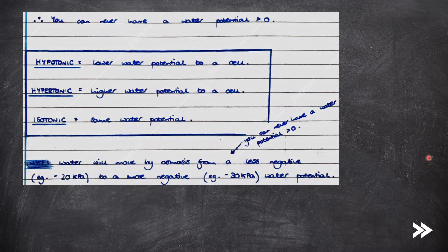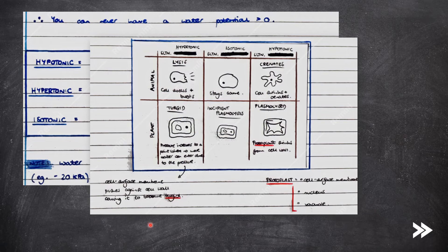Note that water will move by osmosis from a less negative water potential to a more negative water potential. If the surrounding solution is hypertonic, in animal cells this would result in water entering the cell by osmosis, meaning that the cell may swell and burst, and this is known as lysis. In plant cells, it would result in the cell becoming turgid, which is when the pressure increases to a point when no more water can enter due to the pressure exerted by the cell surface membrane pushing against the cell wall.